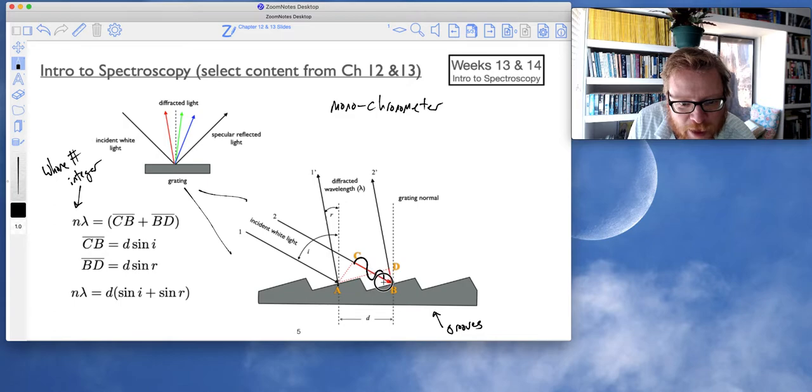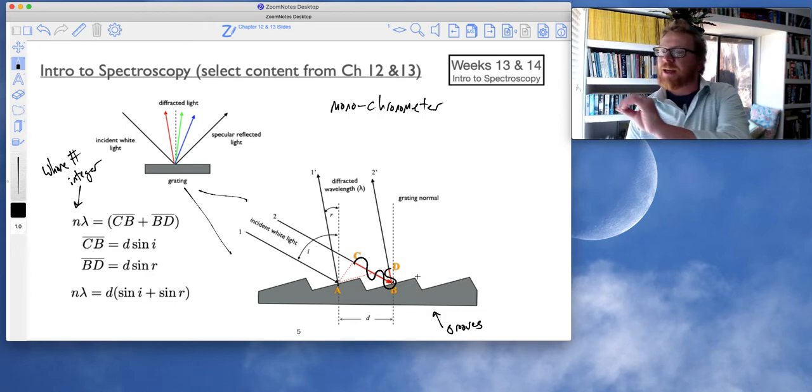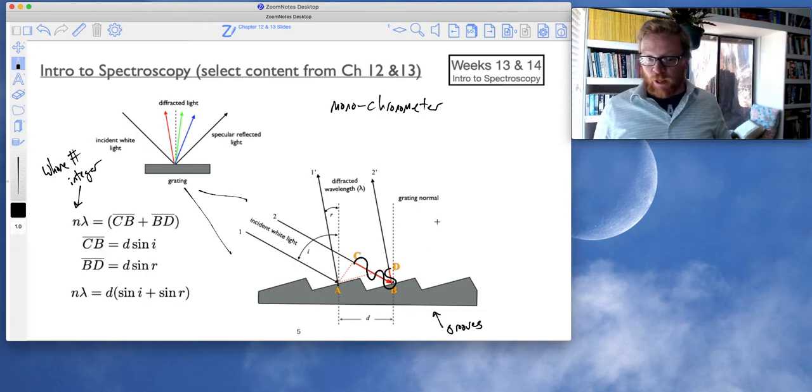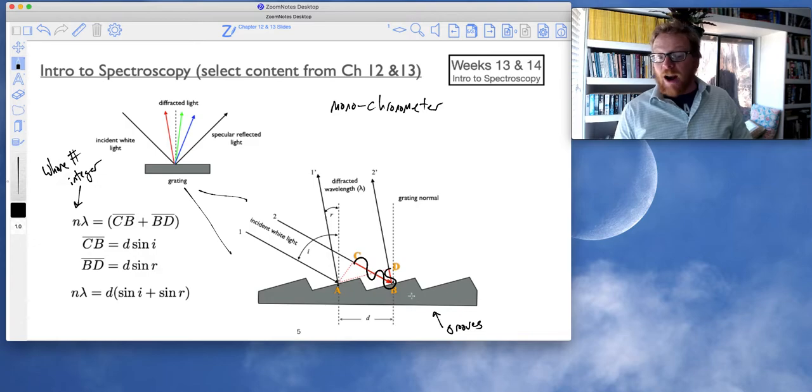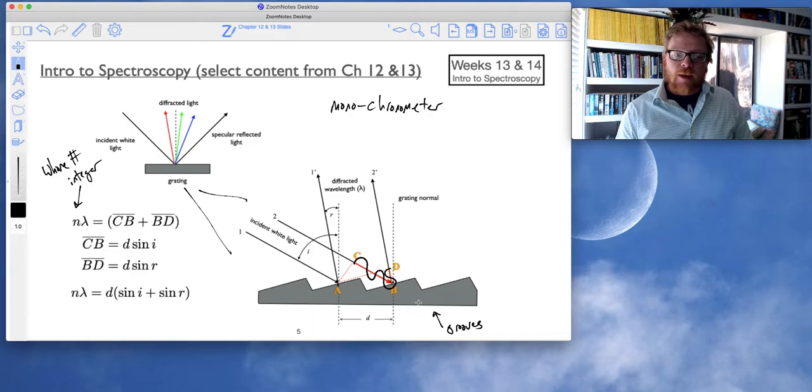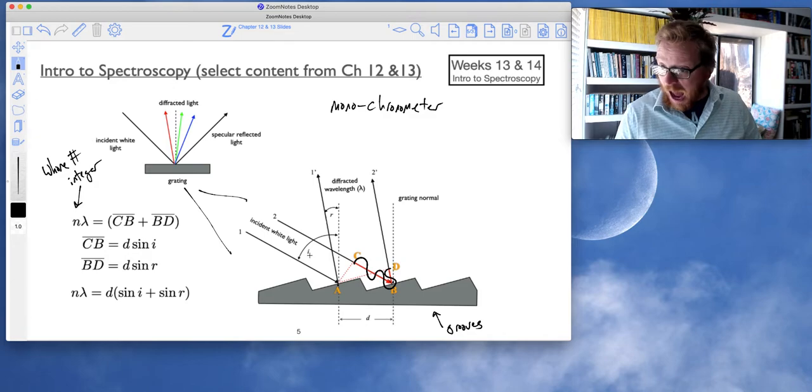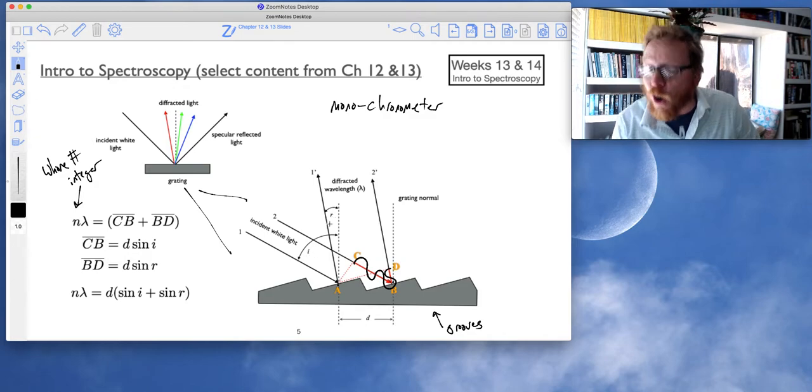So, I'll try to draw that the best that I can, maybe something like that. If I were to unravel that full distance, I need it to be a whole integer wavelength. Then whatever that value is, whatever that wavelength is, that is the wavelength of light that will come off given the incident angle I and, of course, the incident angle R.